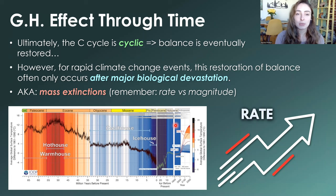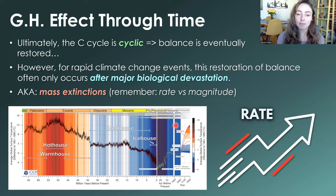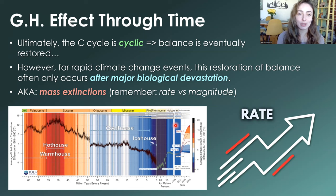The carbon cycle is cyclic, so balance is always eventually restored. During periods like Snowball Earth or the end-Permian mass extinction where atmospheric carbon drastically decreased or increased, the carbon is eventually cycled back through the atmosphere or geosphere and everything balances out. However, when there are periods of rapid climate change, that balance often doesn't come back without major biological devastation — mass extinction events. Rate is more important than magnitude when it comes to causing mass extinctions: gradual climate change over millions of years allows life to evolve and adapt, whereas rapid climate change causes mass extinctions first.